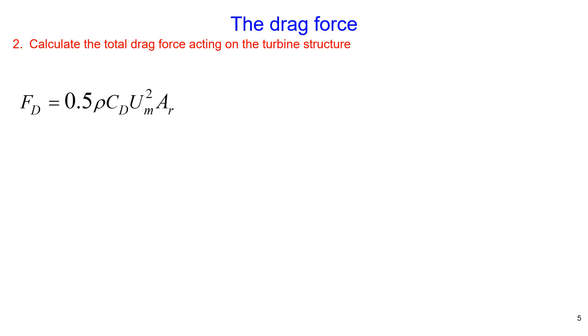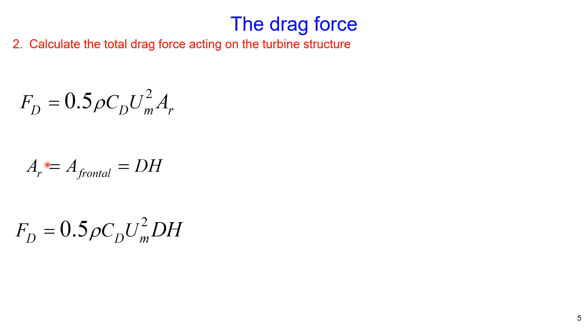Now we need to calculate the total drag force acting on the turbine structure. We will use the standard equation where the reference area is taken as the frontal projected area, calculated as the diameter of the structure multiplied by the height of the structure. We can rewrite the drag force equation as shown on this slide.